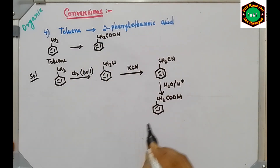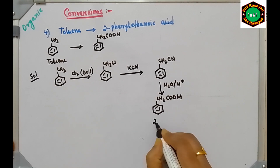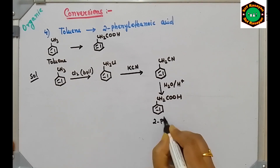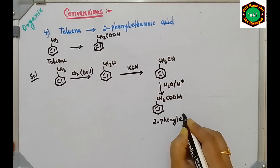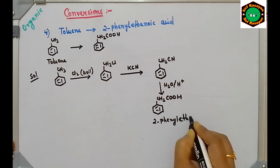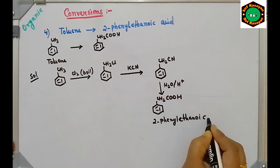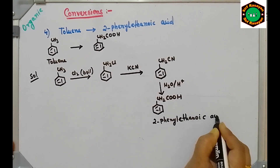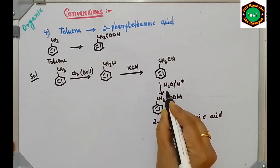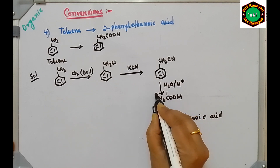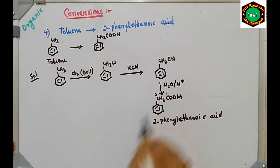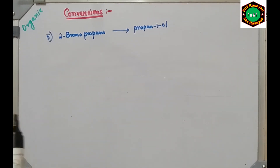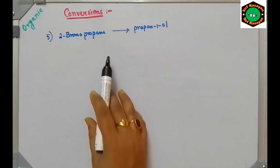Now do acid hydrolysis — CN will be hydrolyzed to COOH — so we get C6H5-CH2-COOH. This is 2-phenyl ethanoic acid. This is carbon 1 (carboxyl) and carbon 2 (bearing the phenyl group), so the phenyl group is at position 2.